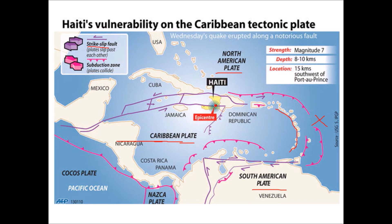Haiti sits on a conservative plate margin where two slabs of the earth's lithosphere move side by side. The Haiti earthquake was not a particularly large magnitude — only magnitude seven — but it was very shallow, only eight to ten kilometres deep, which meant the shaking was quite intense in the capital. So to summarise: conservative plate margins involve two slabs of the earth's crust moving parallel to one another, either in different directions or at different speeds.